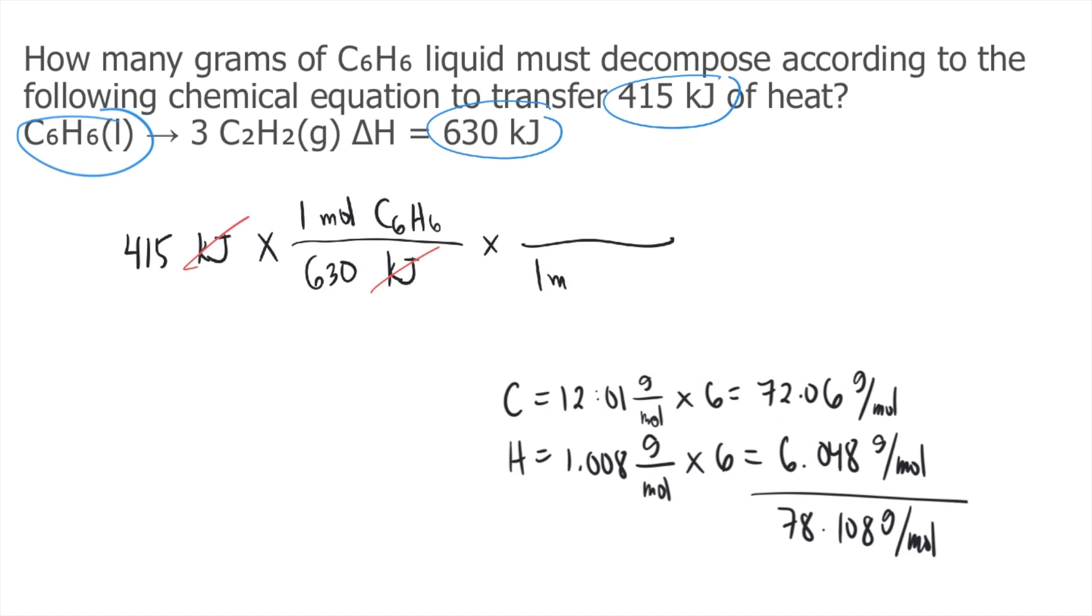That means for every 1 mole of C6H6, that's equivalent to 78.108 grams of C6H6. So the moles of C6H6 cancel out, and now we have grams of C6H6.